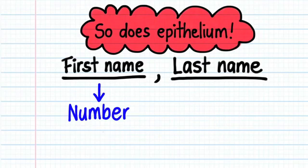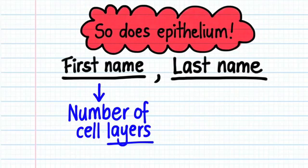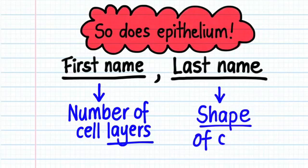In epithelial tissue, the first name always indicates the number of cell layers, whilst the second name indicates the shape of the cells.